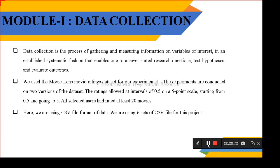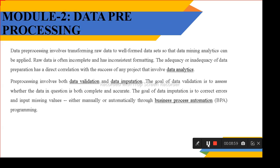For data collection, we have to get data from each and every website wherever the user can be giving a review. We are using the MovieLens movie rating dataset for experiments. Experiments are conducted in two various datasets, one is on a 0.5 to 5 scale rating. We take around 20 movies using a CSV file, and that CSV file is given as input to the algorithms.